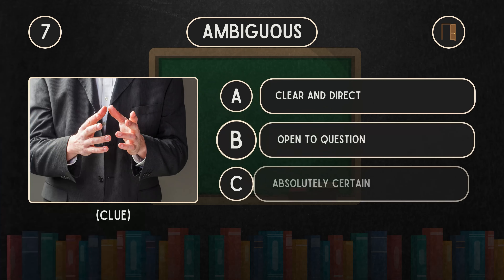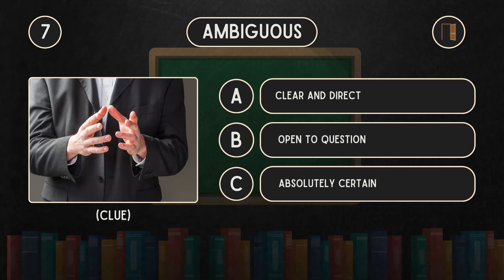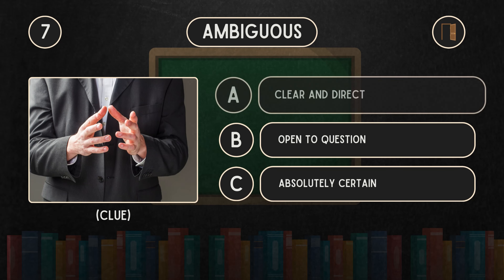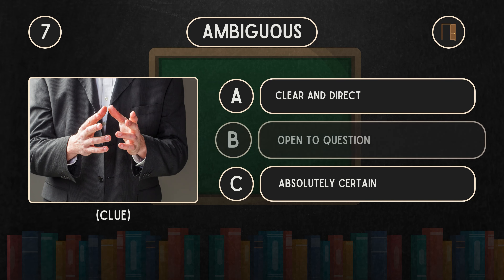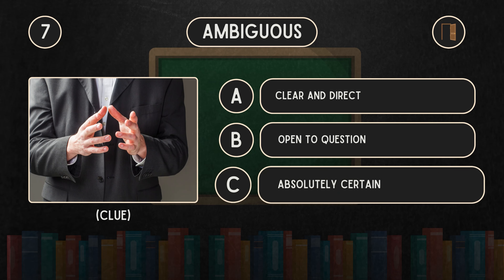What does ambiguous mean? Is it A: Clear and direct. B: Open to question. C: Absolutely certain.